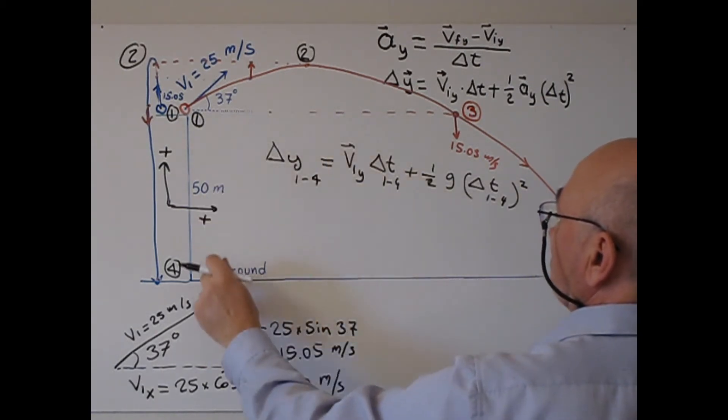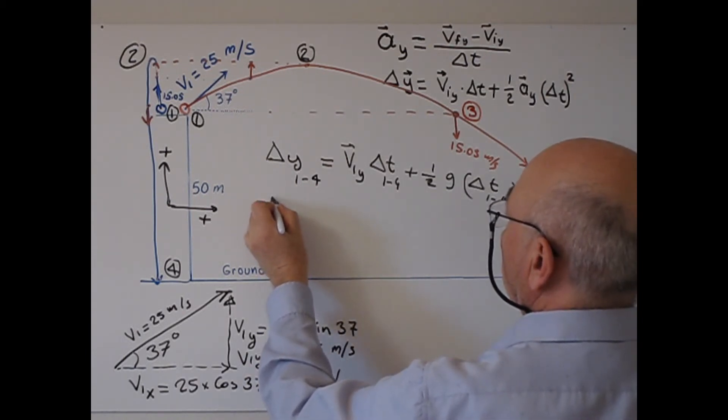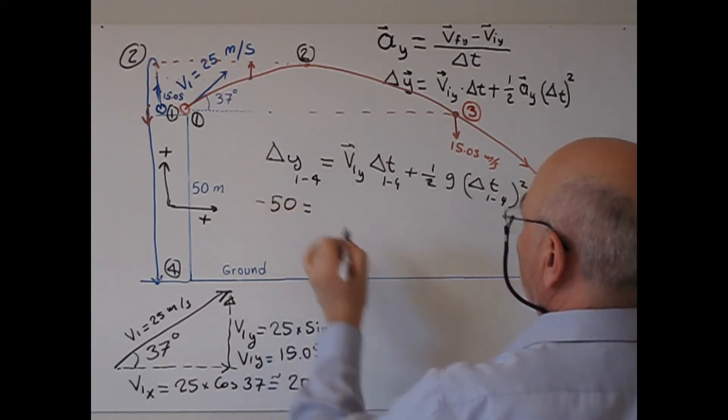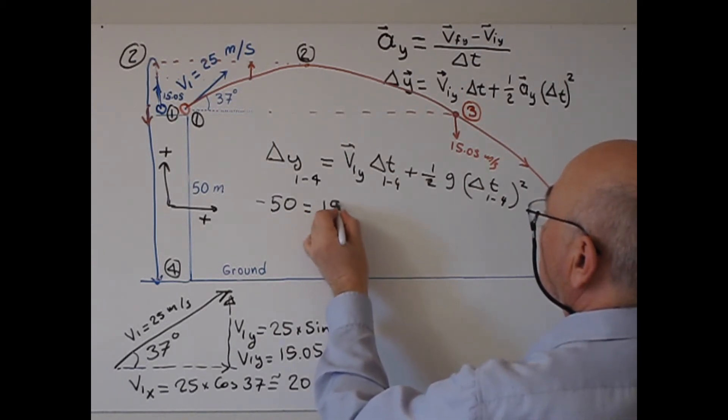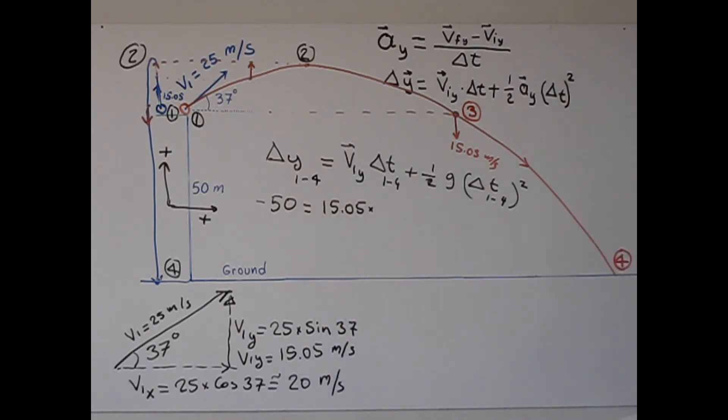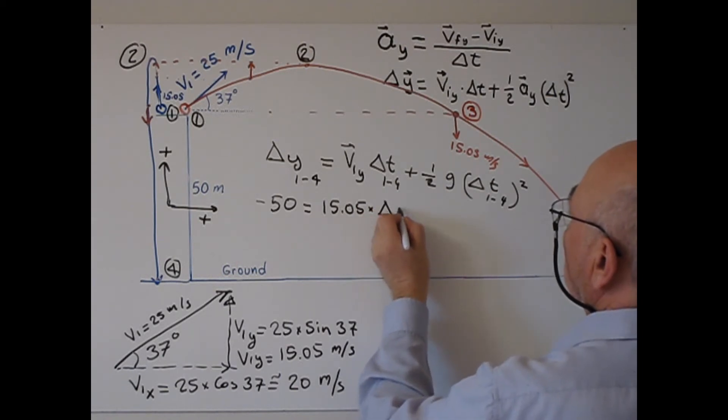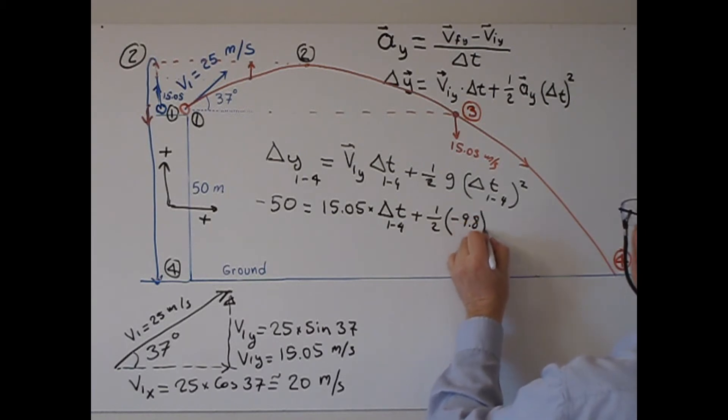This is the reference level, so zero. The level of this one is negative 50, so we write here negative 50 equals v1y equals 15.05. I don't write the unit, I don't have much room. Delta t14 plus one-half g, which is negative 9.8, times delta t14 squared.